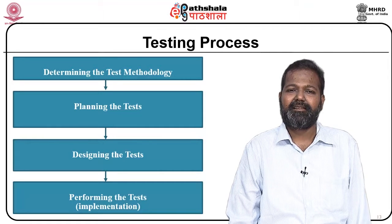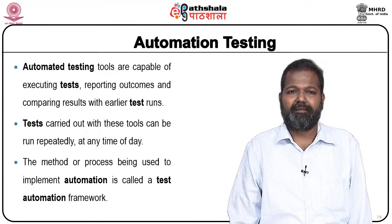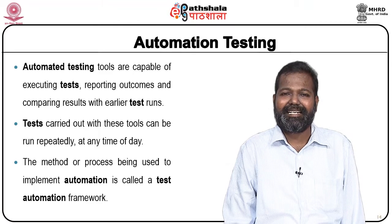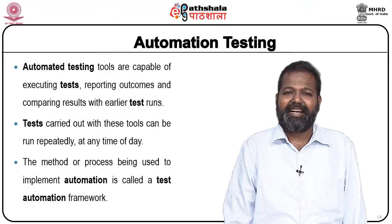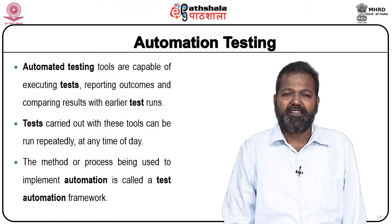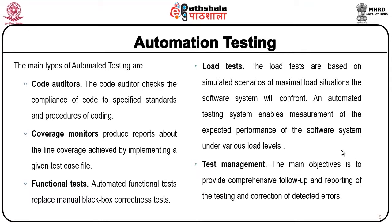Next: planning the test, designing the test, and performing the test. Automation testing: automated testing tools are capable of executing tests, reporting outcomes, and comparing results with earlier test runs. Tests carried out with these tools can be run repeatedly at any time of day. The method or process used to implement automation is called a test automation framework. The main types of automated testing are: code auditors, coverage monitors, functional tests, load tests, and test management.